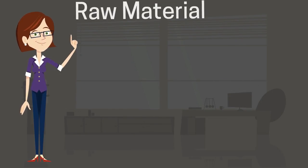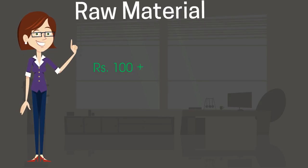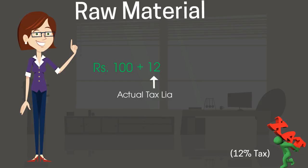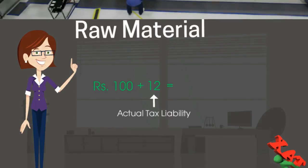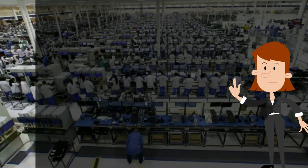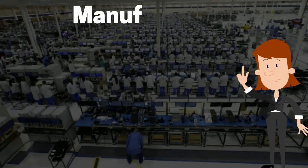In the initial stage, raw material is purchased for the cost of 100 rupees and 12 rupees is paid as tax at 12%. Here the actual tax liability will be 12 rupees and total cost will be equal to 112 rupees.